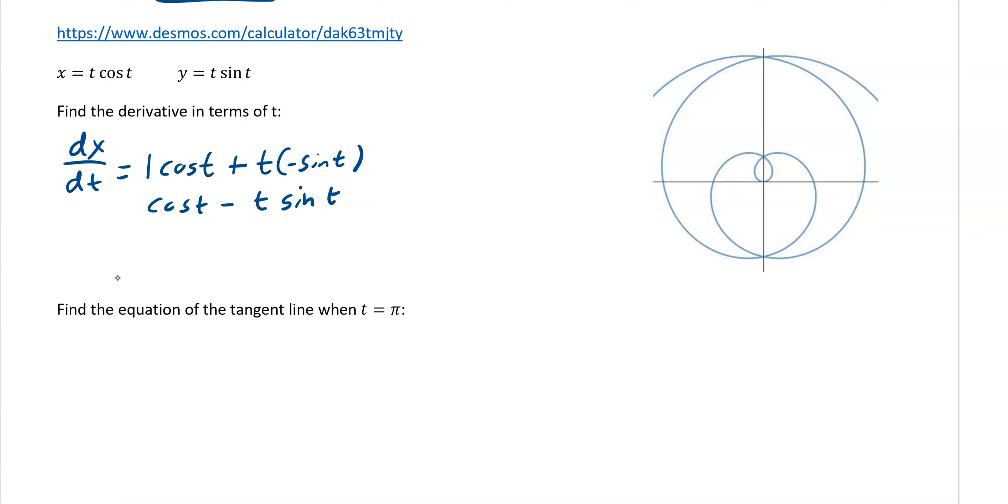And so we can now plug it in. So dx/dt would be cosine of π minus π sine of π. And you can plug this completely in your calculator, but you get negative 1 minus π times 0. And so that's negative 1. So that's our dx/dt.